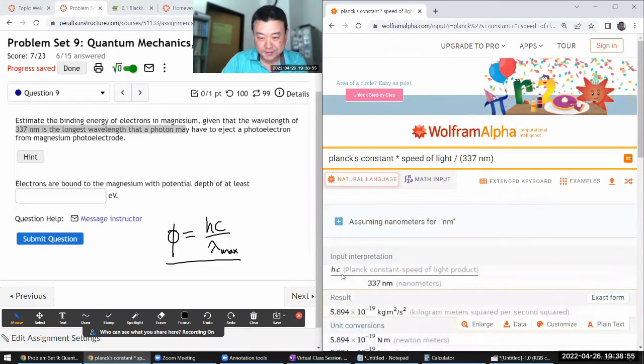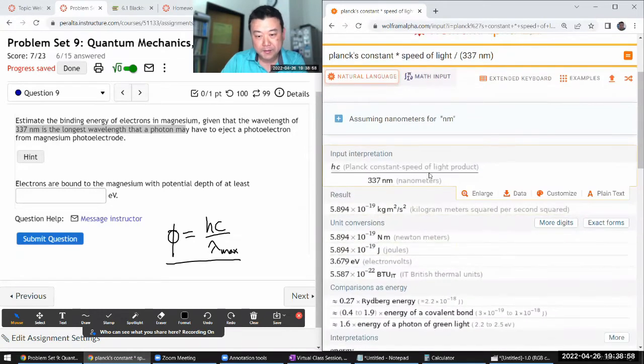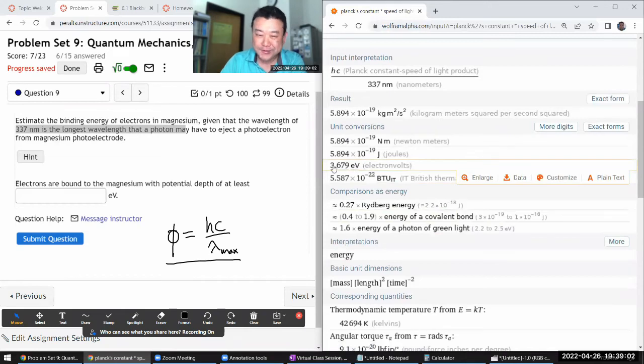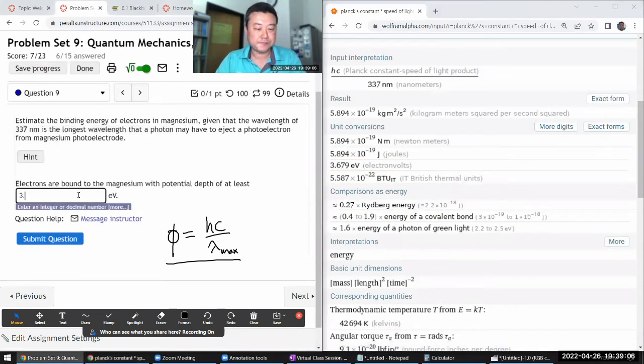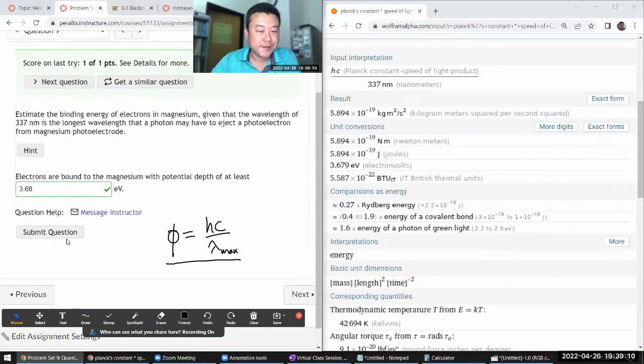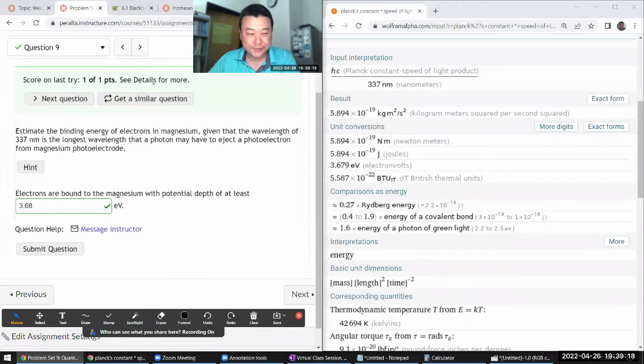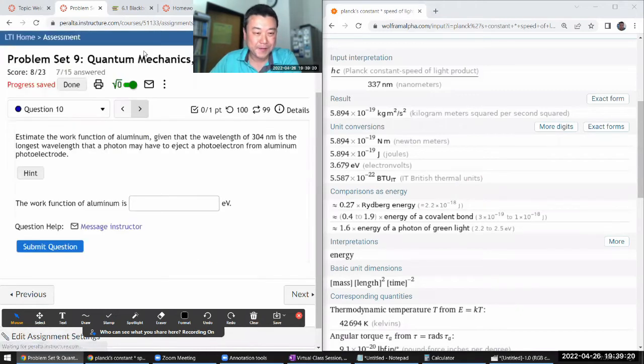Wolfram Alpha will look up all the constants and do that. Divide by that. One of the answers is in electron volts: 3.68 electron volts. You know, if you want, you can also look up the constant, these physical constants yourself. I'll leave that for you to do.